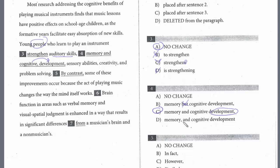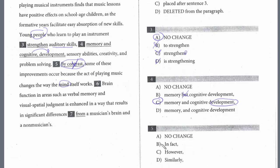And then question five. 'By contrast, some of these improvements occur because the act of playing music changes the way the mind itself works.' This final sentence is a transitional question. We just finished listing all these mental benefits, and then we've got this next sentence. We don't want contrast — there's certainly no contrast here. And if we look at the other choices, it's not 'contrast' and it's not 'however' — those are both pretty synonymous, and they're certainly not right either. In fact is the answer.